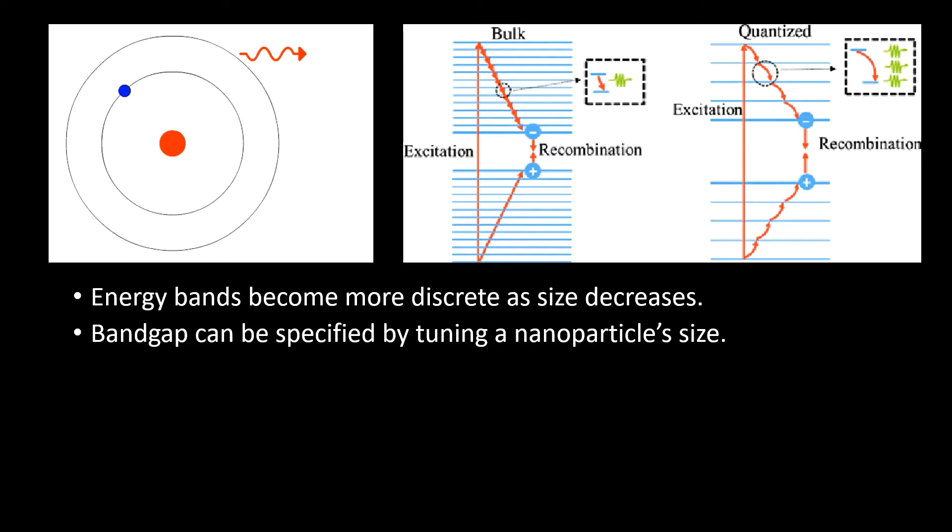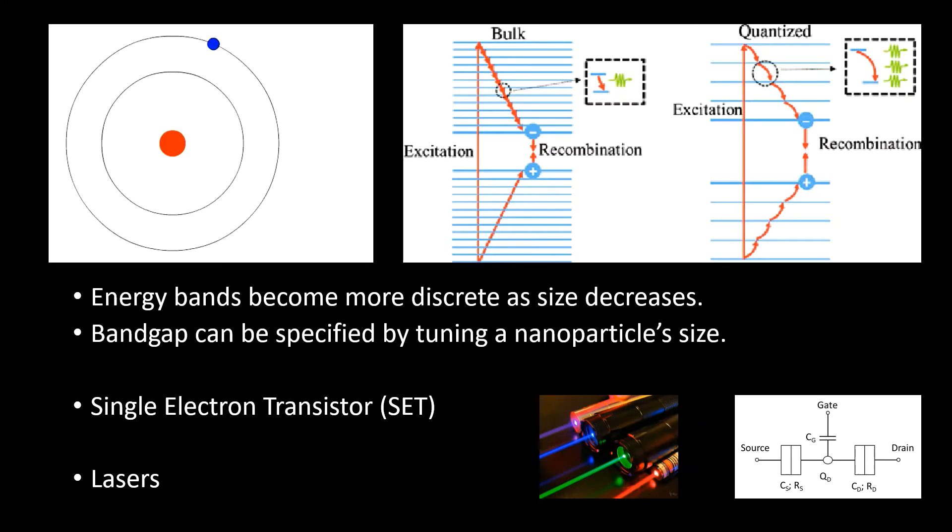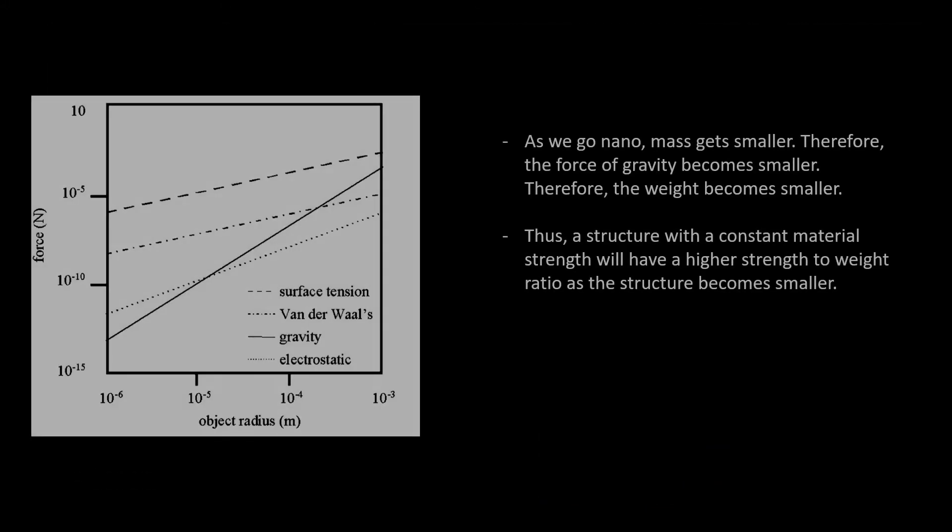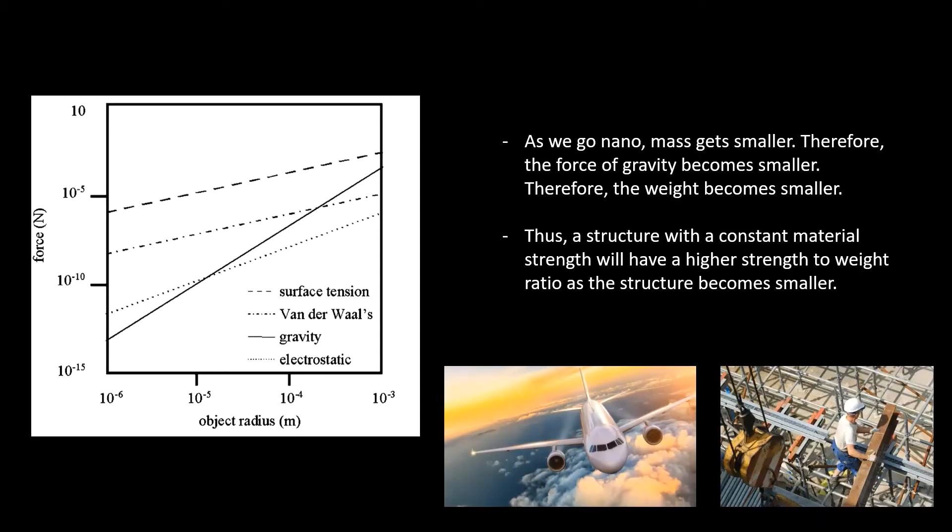This can lead to tuning a particle's optical and electrical properties to very specific standards and has allowed for the creation of devices such as the single electron transistor and more efficient lasers. Furthermore, forces such as gravity become less and less effective at the nanoscale, eventually being overcome by van der Waals and electrostatic forces. Combined, these effects can lead to a high strength-to-weight ratio and have applications in areas such as the aerospace and construction industries.